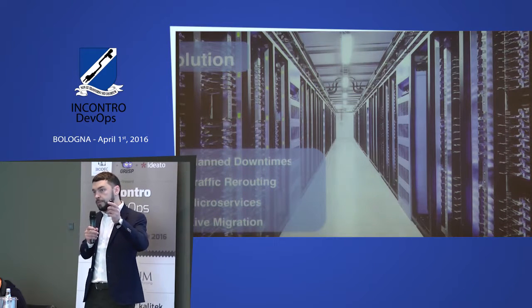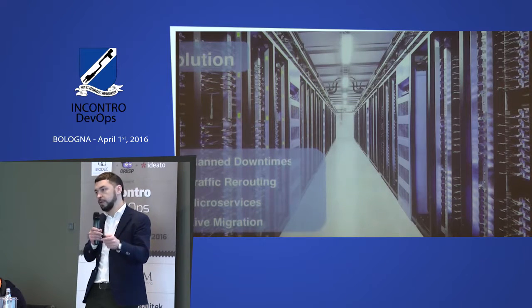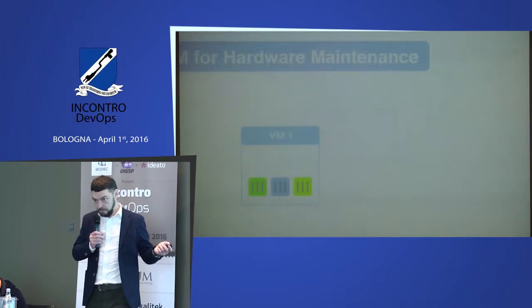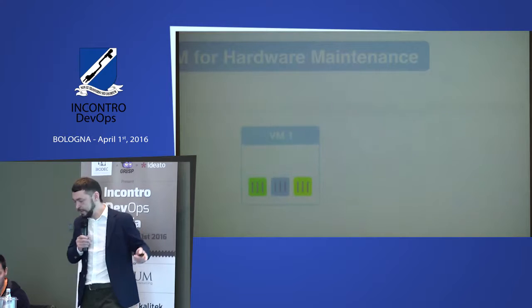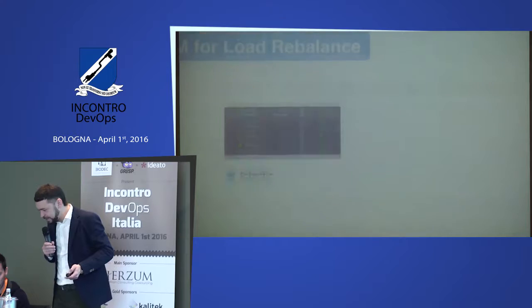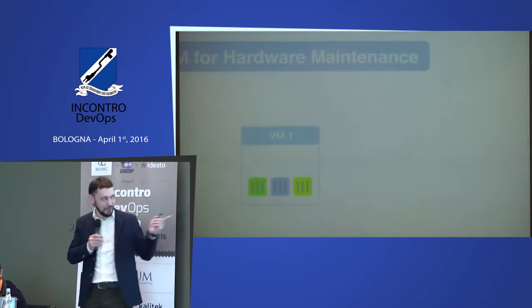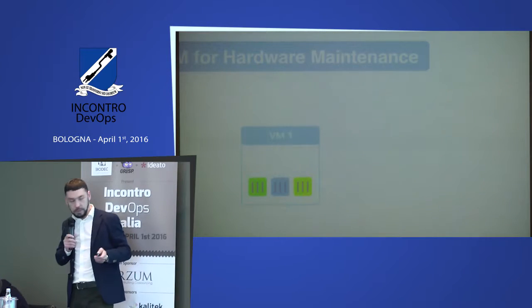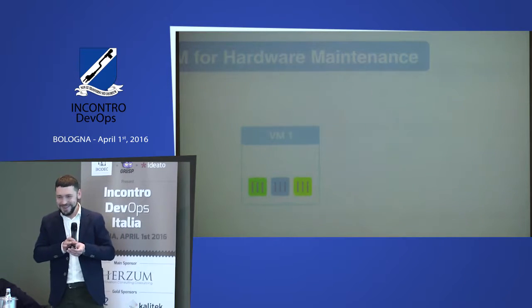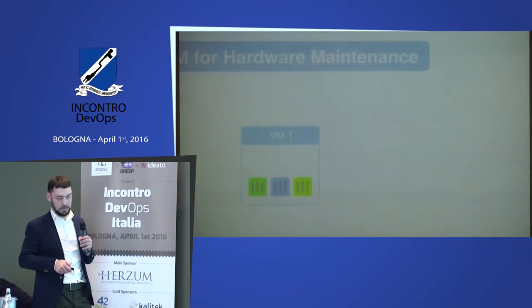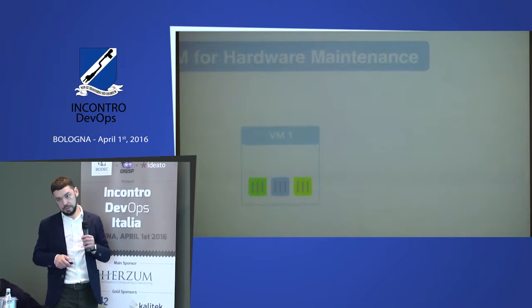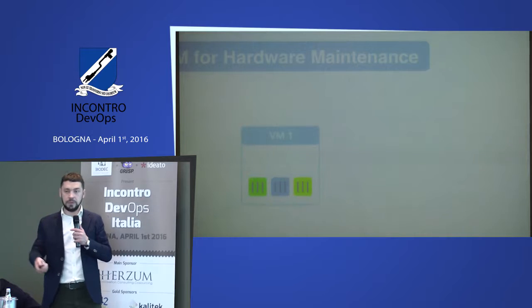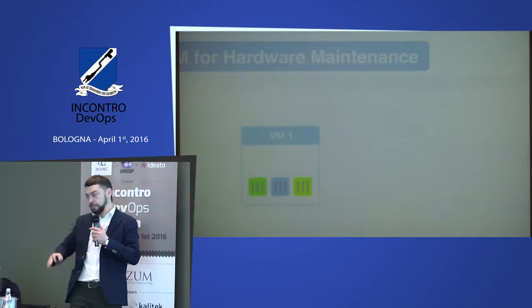How does live migration work? Let's say we have a virtual machine. We have containers inside, and we have a new virtual machine. What you do is migrate these containers without downtime from this virtual machine to another one, and after that you just shut down the old one. Pretty straightforward — you don't need to redesign your applications because it's done at the bottom level, the infrastructure level.